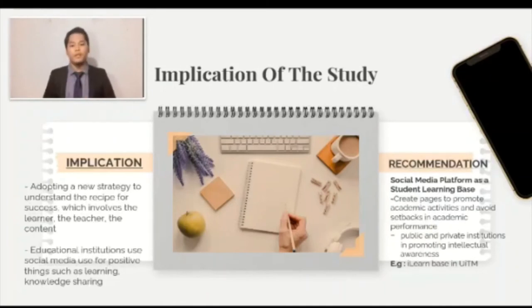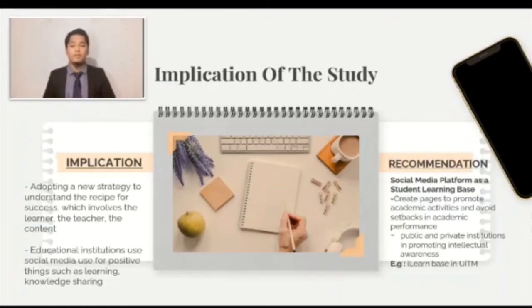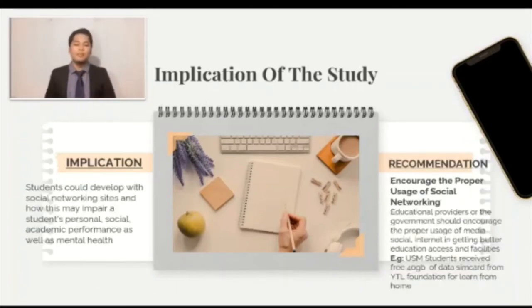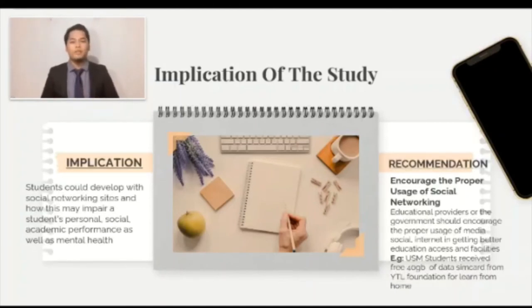For example, UITM has provided an internet learning base, namely iLearn. However, after the MCO, students needed to frequently access the website as everyone was learning from home. The website frequently could not be accessed due to the limit of users. Therefore, UITM should improve iLearn to be compatible with a large number of students. Students could be affected by social networking sites, impairing their personal, social and academic performance as well as their mental health. Hence, we encourage the proper usage of social networking. The educational provider and government should encourage the proper usage of social media and internet in getting better education access and facilities.